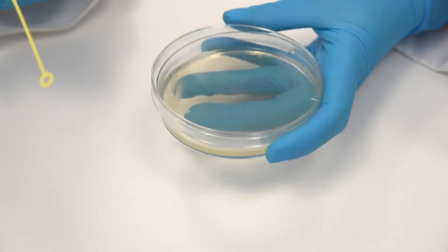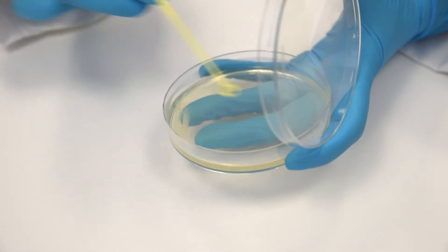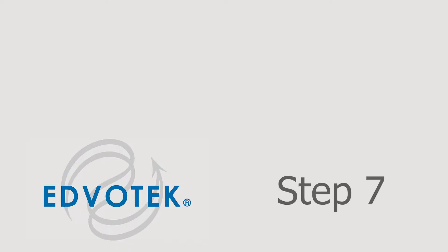Step 7: Cover the plate and incubate inverted at 37 degrees Celsius for 18 to 22 hours.